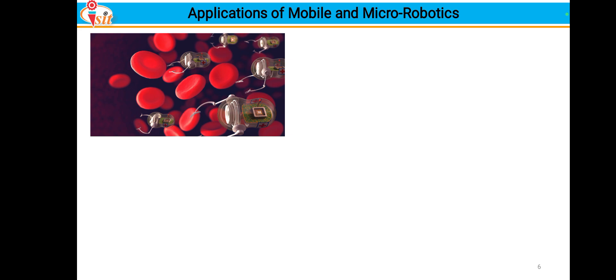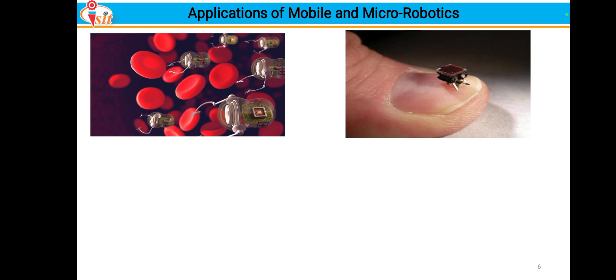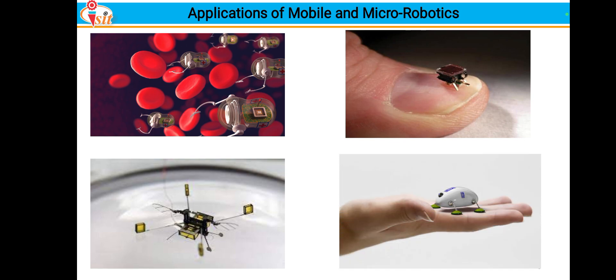The first figure shows small micro robots measuring red blood cells in the blood — the size is very, very small. The second picture shows a micro robot kept on the thumbnail — it is very small in size and is especially used in medical and space applications. The third figure looks like a mosquito but it is actually a robot, very small in size. The fourth figure is used specifically for medical applications.